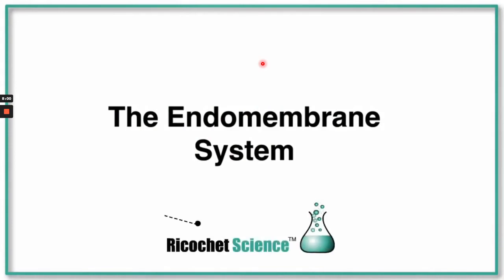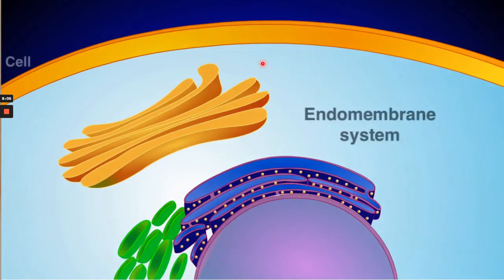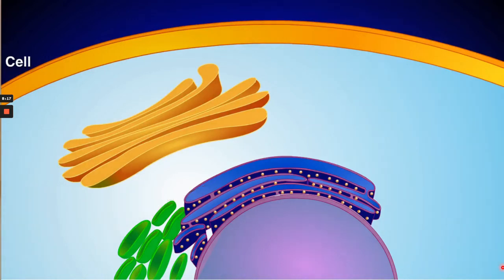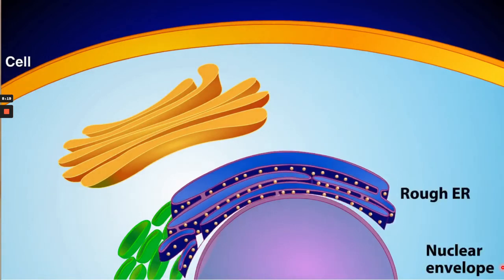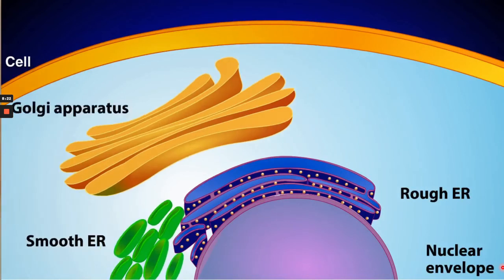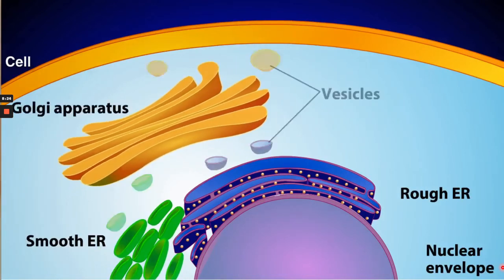I will also share a video about the endomembrane system. The endomembrane system is a collection of membrane-based organelles that work together to create, modify, and export cell products such as proteins and lipids. It consists of the nuclear envelope, the rough and smooth endoplasmic reticulum, the Golgi apparatus, and several types of vesicles.